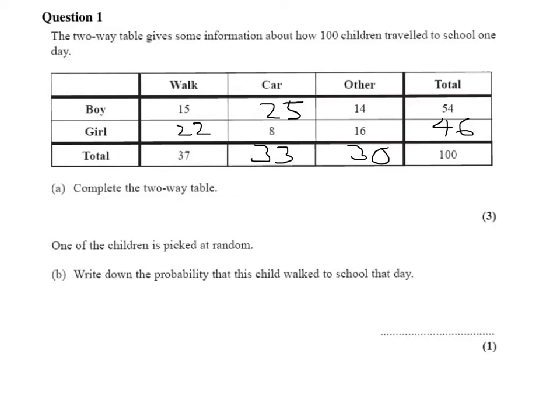A different question for one mark: write down the probability that this child walked to school that day. If we look, the number that walked is 37 from 100. So the probability is 37 out of 100. And that's question one done.